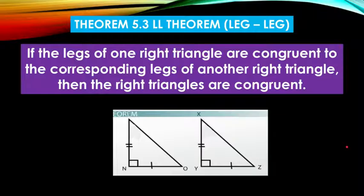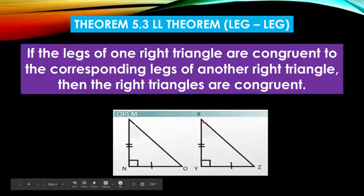That's why it's called the leg-leg theorem. The marks of congruence are on both legs of our right triangle. This cannot be a leg because this is called the hypotenuse or the longest leg of our right triangle.